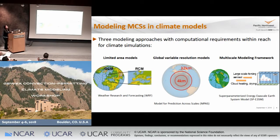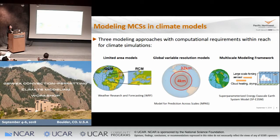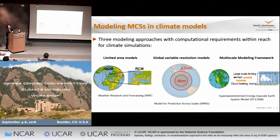So I think there are three different modeling approaches that are really computationally feasible now for climate simulations. One method is using a limited area model, and Roy already showed some examples — I'm going to show you some as well. Another approach is to use a global variable resolution model where you can have a regional refinement down to higher resolution. We have been working with a model called MPAS, a non-hydrostatic global variable resolution model, configured with a regional refinement down to four kilometers over the United States.